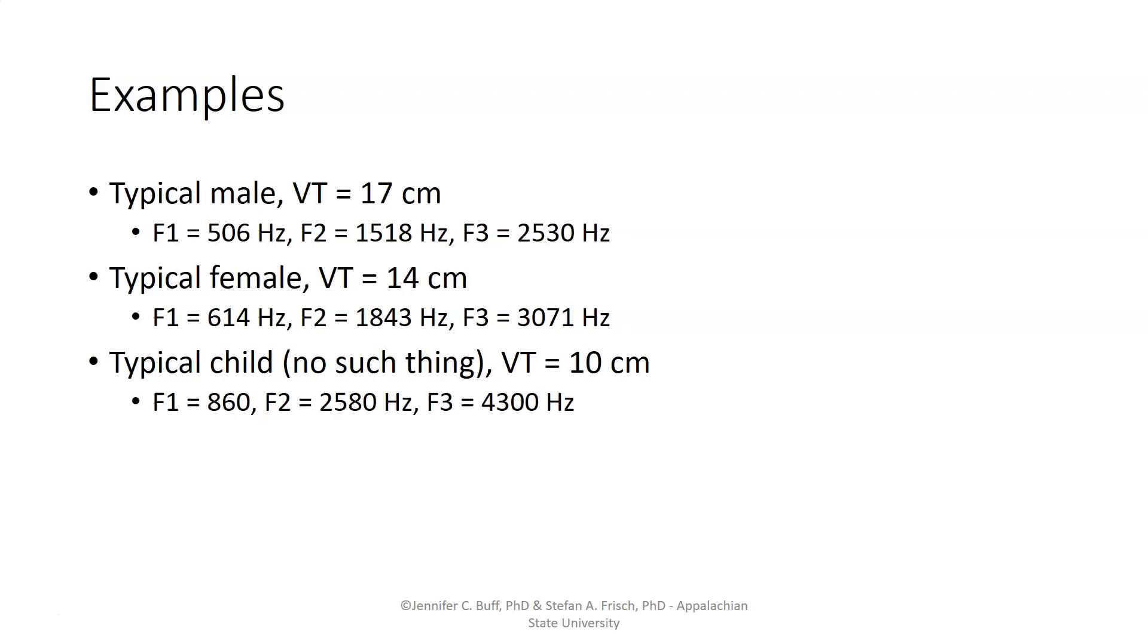So based on the size of typical humans, we can get an estimate for what resonances we would expect from the neutral schwa vowel for a vocal tract of 17 centimeters. We get a first formant of 506 hertz. We get that by taking the speed of sound, 34,400, dividing it by four times the length of the tube, so dividing it by four times 17, which is 68, to get 506. Second formant would be three times that. Third formant would be five times that.